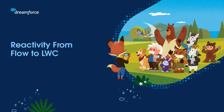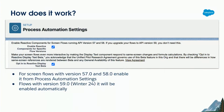There are two sides to reactivity. One is from flow to LWC. To make standard components behave reactively, any flow you create in Winter '24 — which is flow version 59 — will automatically have this feature, with nothing else needed. For flows on versions 57 and 58, you need to navigate to Setup, Process Automation Settings, and enable reactive components for those specific flow versions. Also, the display text component is currently in beta for reactivity and you'll need to opt in specifically for that as well.